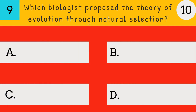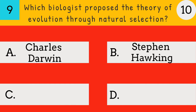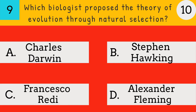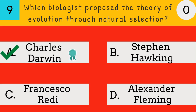Which biologist proposed the theory of evolution through natural selection? Charles Darwin, Stephen Hawking, Francesco Redi, or Alexander Fleming? The answer is Charles Darwin — Charles Darwin proposed the theory of evolution through natural selection.